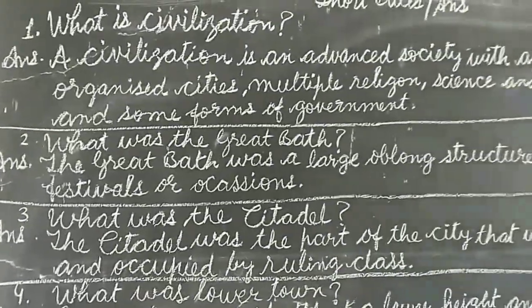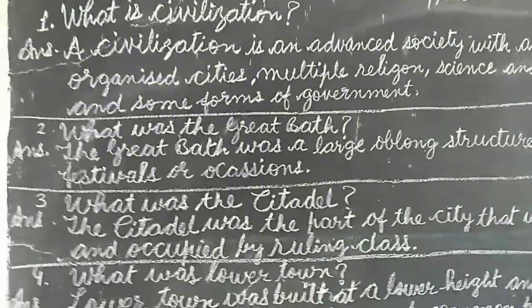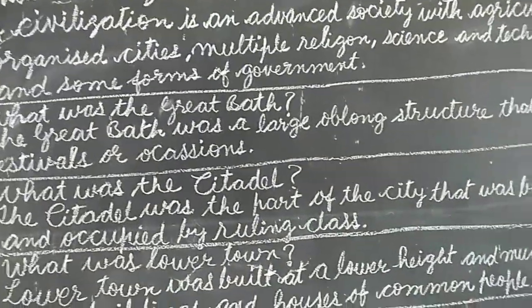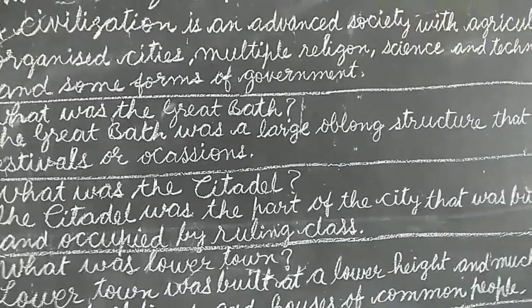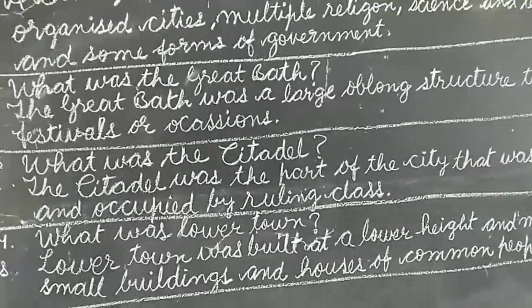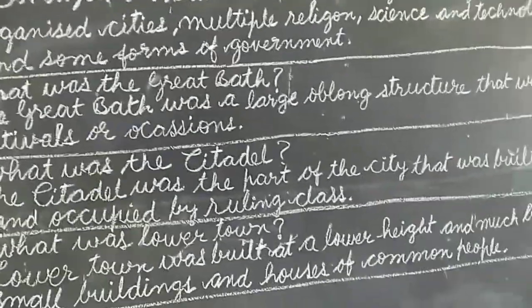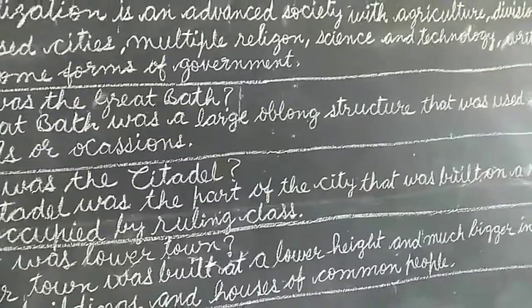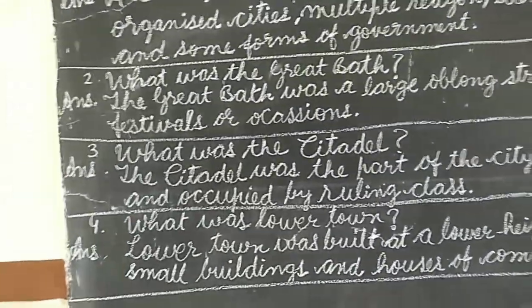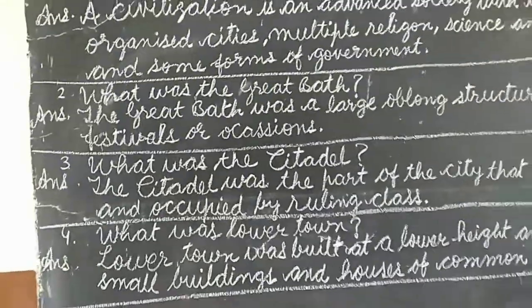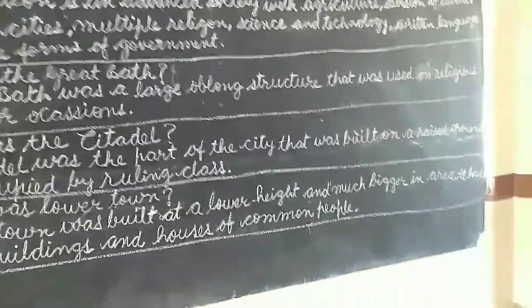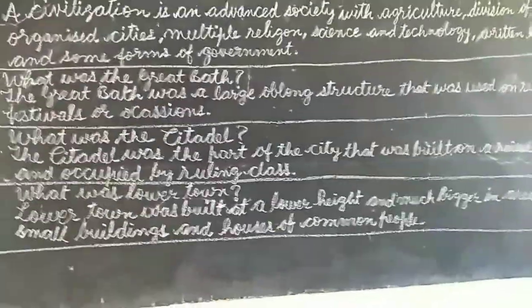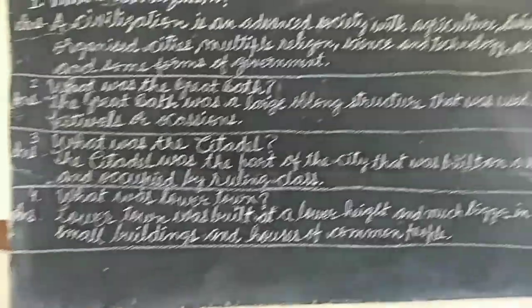So civilization is an advanced society which has agriculture, division of labor, organized cities, many religions, science, technology, and different types of written languages and forms of government.